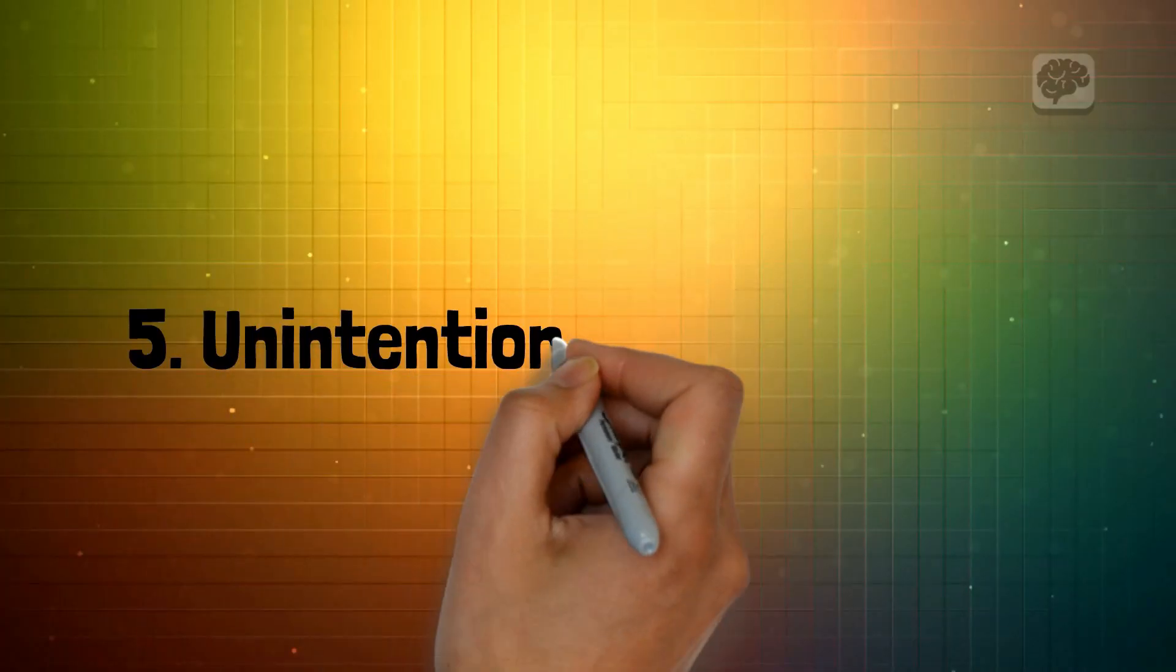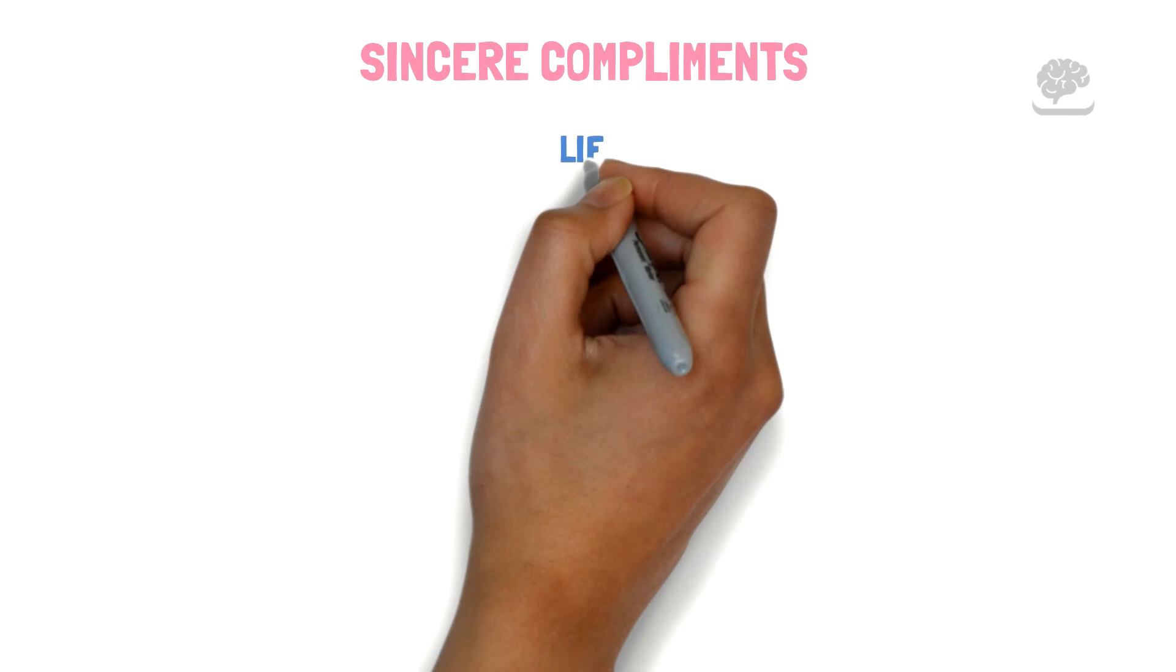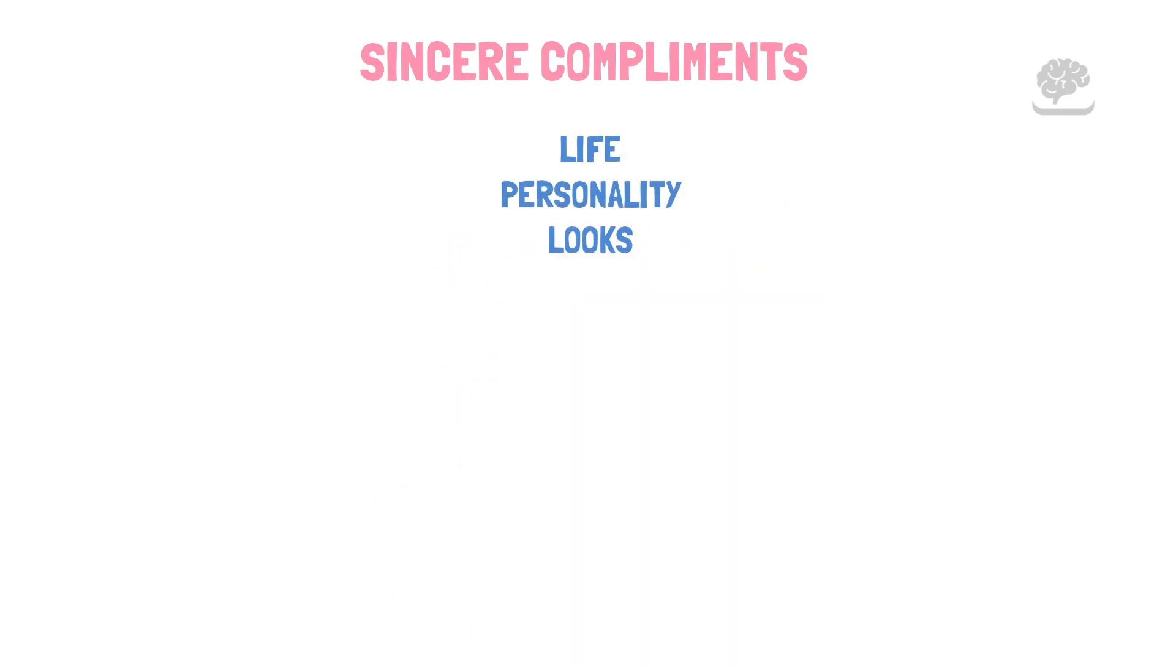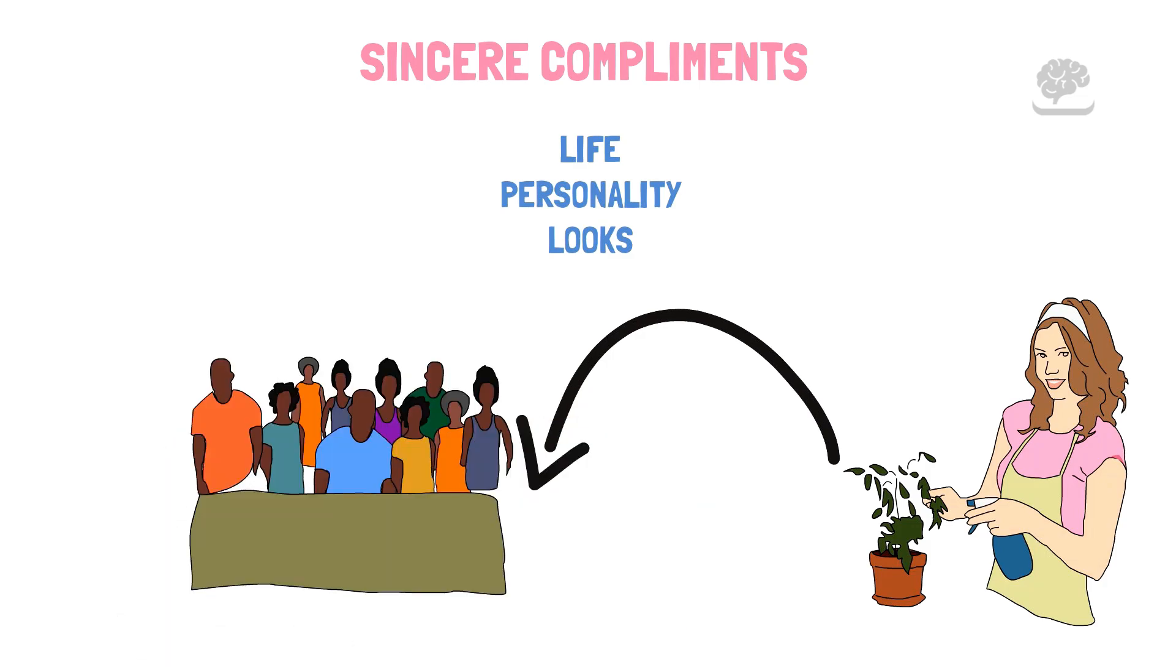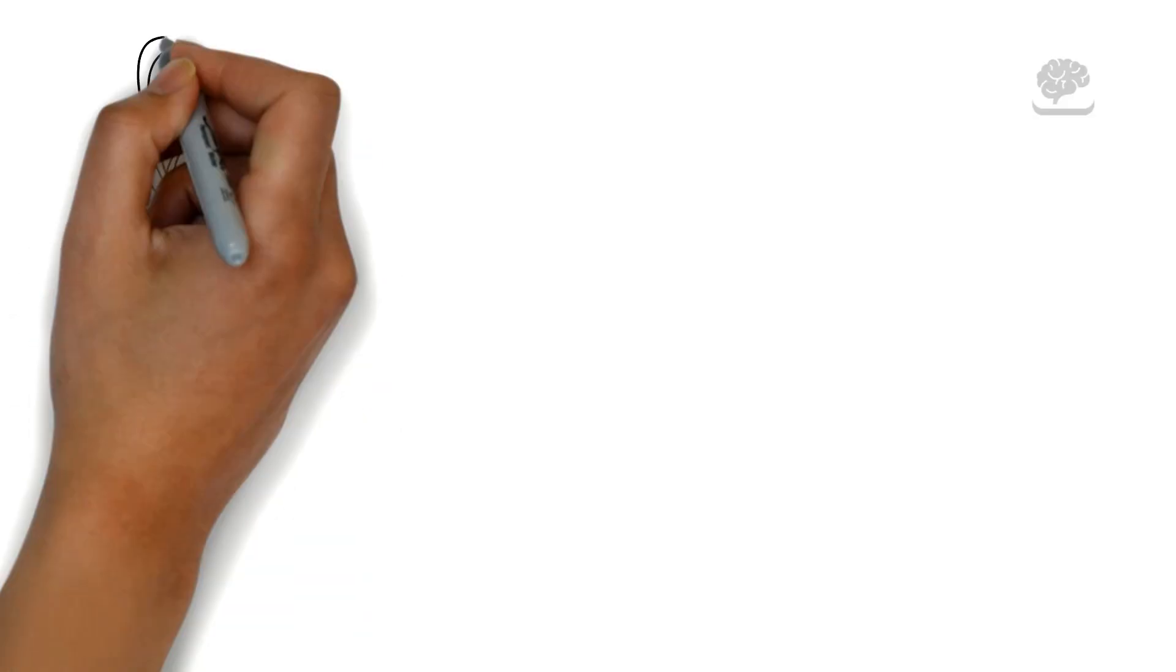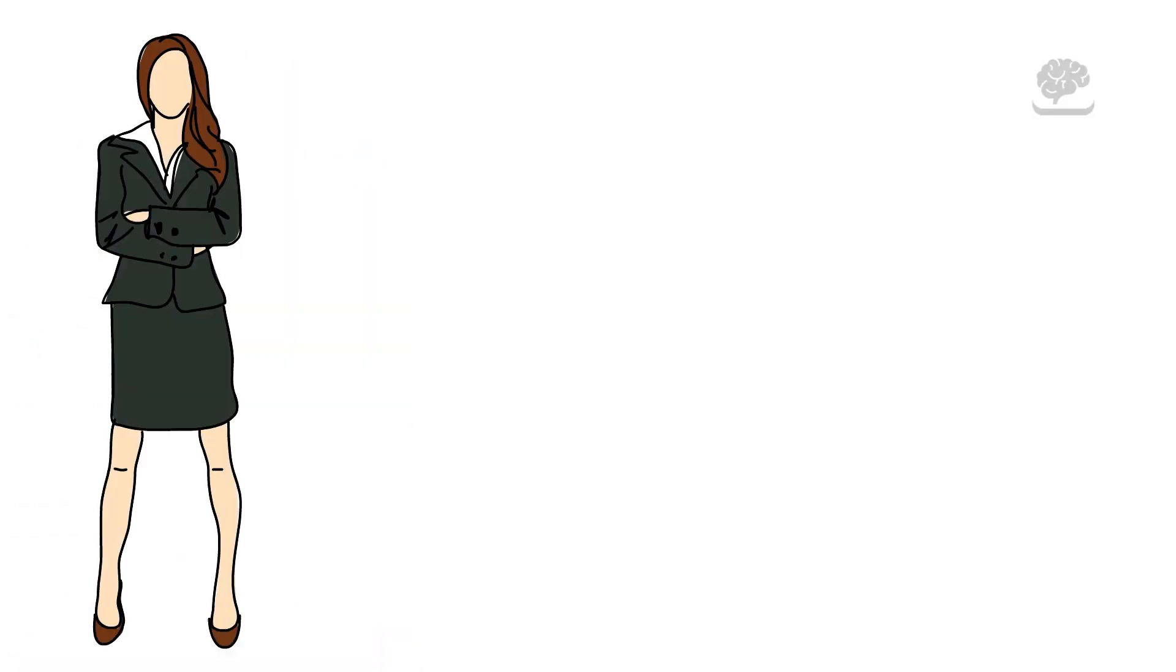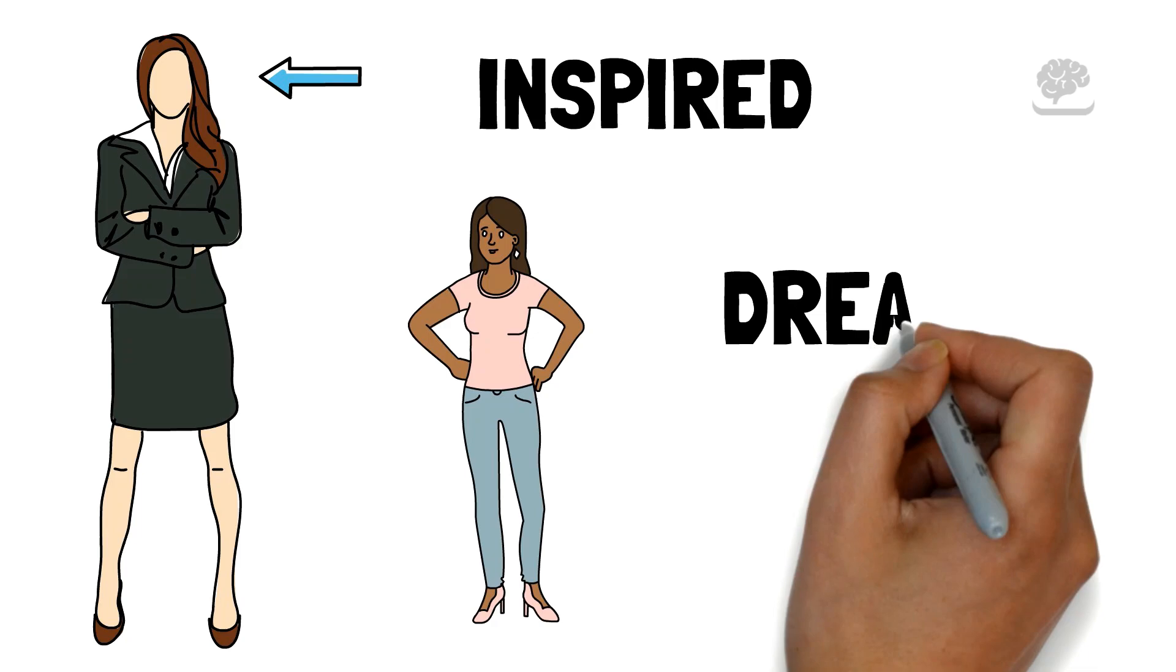Number 5: Unintentional compliments. If you often get sincere compliments about your life, personality, or looks, it means your attractive features are easily noticed by others and leave a strong impression. Number 4: Inspiring confidence. An attractive person naturally gives others confidence. Being sure of yourself and believing in yourself helps others feel inspired, making them want to accept their uniqueness and follow their dreams.